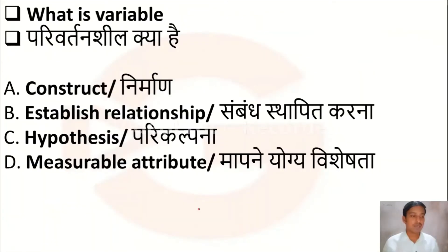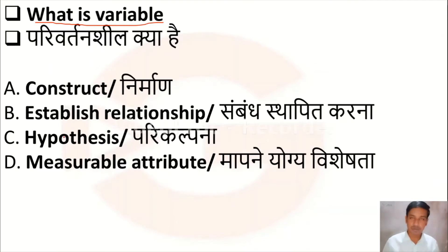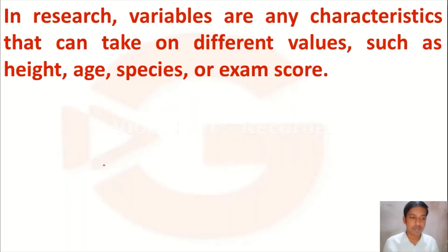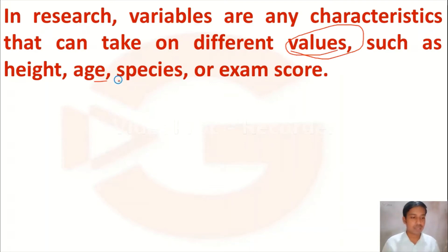Now let us move to the question. The question is: what is a variable? Option A: construct. Option B: established relationship. Option C: hypothesis. Option D: measurable attribute. A variable is a value which is changing, such as height, age, species, or exam score.